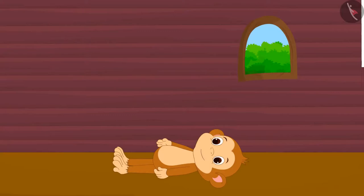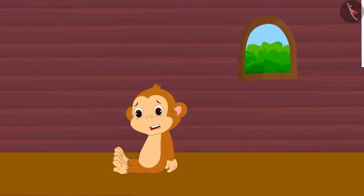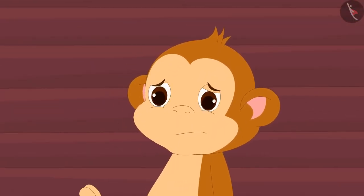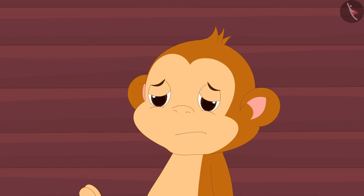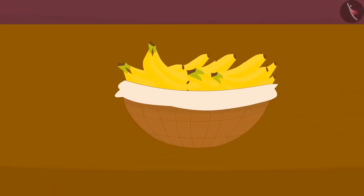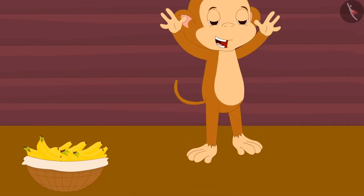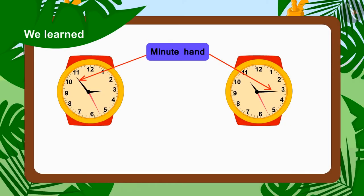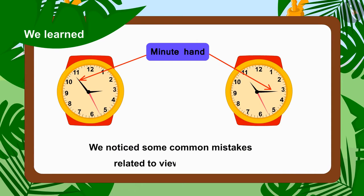When Babban woke up, he found himself in his house. Because Babban saw the time in the watch wrong, and shortly after Babban went to sleep, it was 2 o'clock and he returned to his house. Babban became depressed for a while. But then he saw that the angel had placed a lot of bananas in a basket beside him. Babban started dancing happily after seeing this. Children, in this video we learnt about some common mistakes related to telling time.